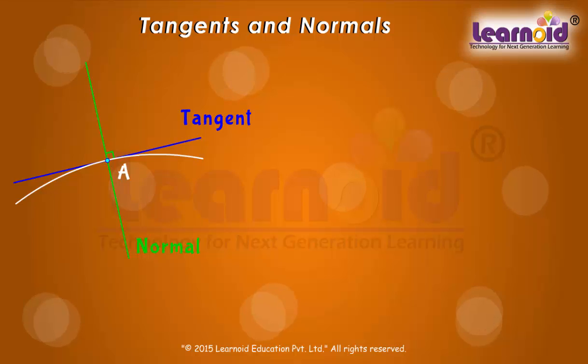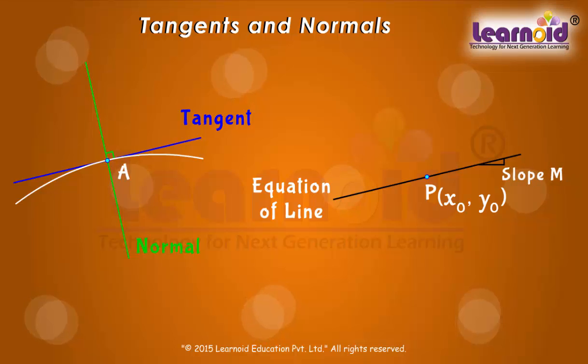From coordinate geometry, we know that the equation of a straight line passing through a given point (x₀, y₀) and having slope m is given by y - y₀ = m(x - x₀).